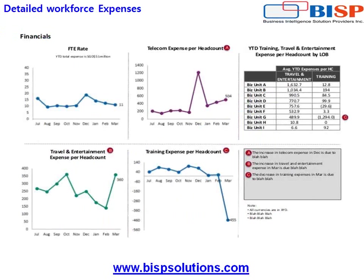This is another summary dashboard which your HR manager, CFO, and decision makers like to know about your organization — things like FTE rate, employee expenses per headcount, and employee direct and indirect expenses across different departments or lines of business. This is where Hyperion Planning comes into picture.